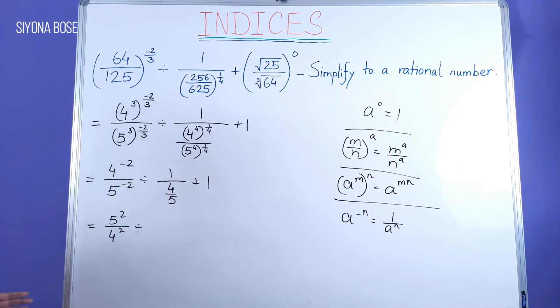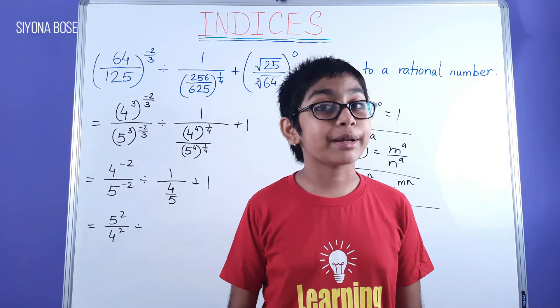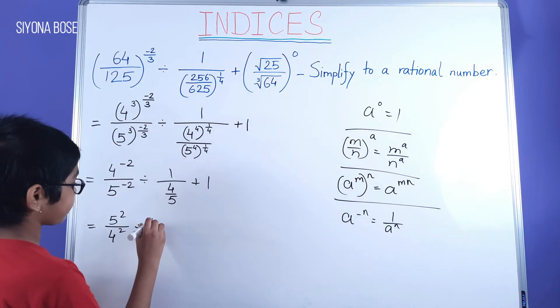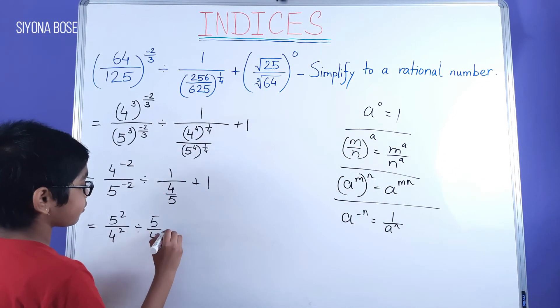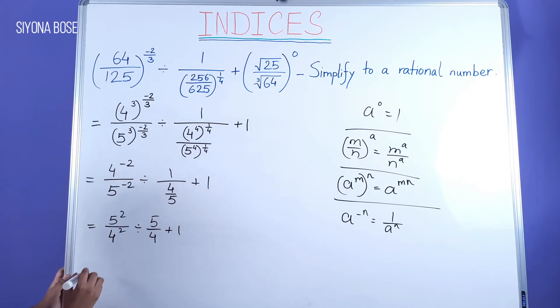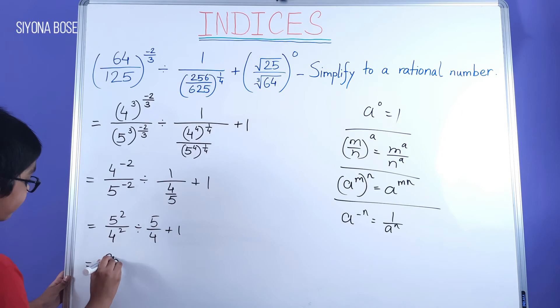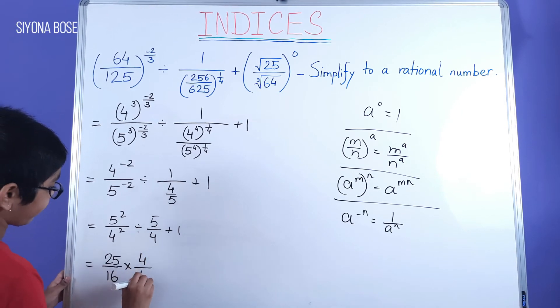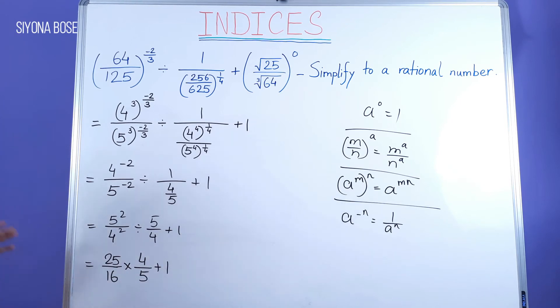Then it's 1 into 5 by 4. So ultimately, 1 into 5 by 4 is 5 by 4. So 5 by 4.